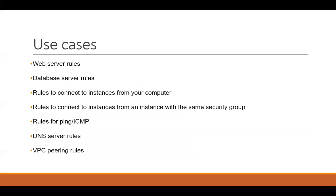The use cases for security groups include web server rules like HTTP port 80 and HTTPS, database server rules like port 1433 for SQL or MySQL, and rules to control which IP addresses are allowed to connect to instances. We can also define rules to connect instances within the same or different security groups, rules for ping and ICMP, DNS server rules, and VPC peering rules for how instances can communicate with each other.